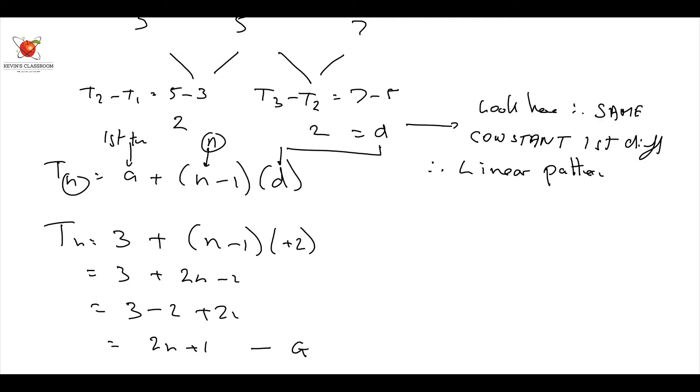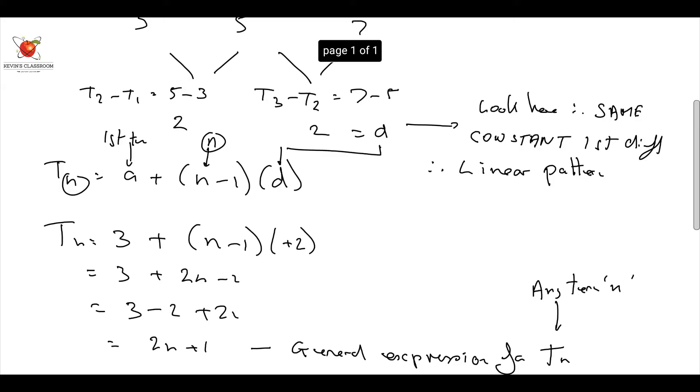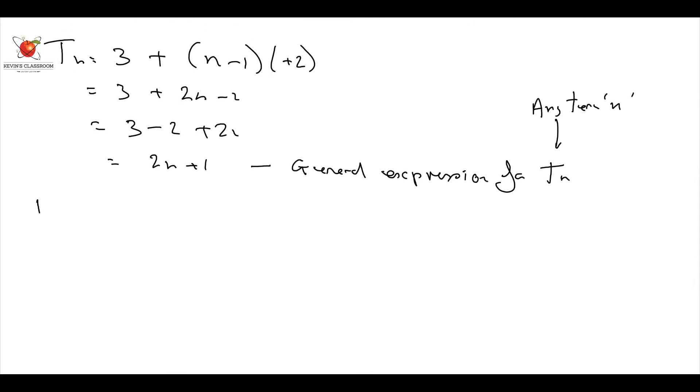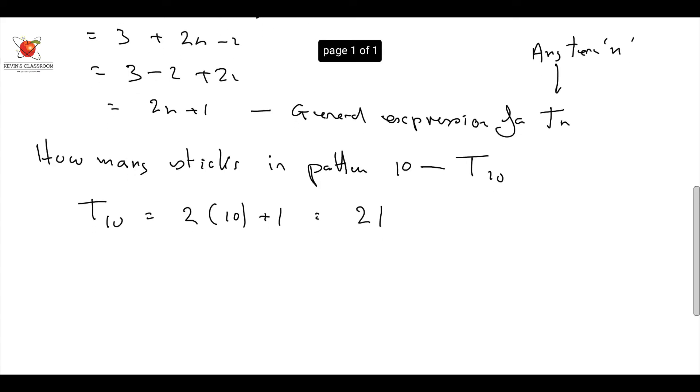So the next question, that is the general expression for TN, which actually means any term N, doesn't it? So now they have said to us, how many matches in pattern number 10? So the question is, how many sticks or matches or whatever in pattern 10? What do I do? I say, okay, can you see pattern 10 means term 10? Therefore, term 10 is going to be equal to two times 10 plus one, which is going to be 21. Always fill it in the brackets. Don't simplify until you're right at the end.